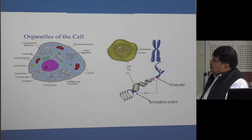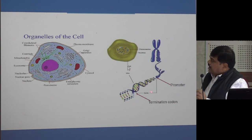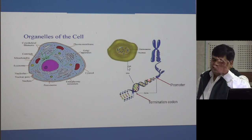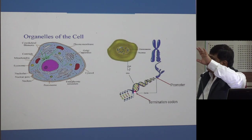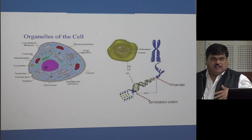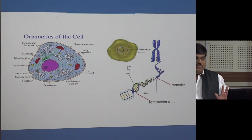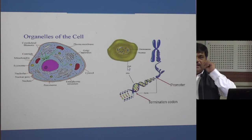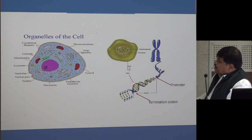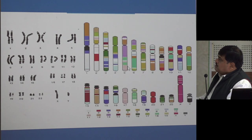A gene is defined by two important things: a promoter and a termination codon. A sequencing machine reads the genes — when it finds a promoter it recognizes a gene has started, and when it finds the termination codon it knows the gene has ended and assigns it a number. But the machine only gives numbers; it doesn't know the functions of those genes. Our job is to find out those functions.